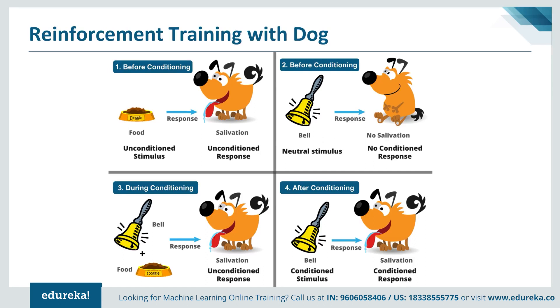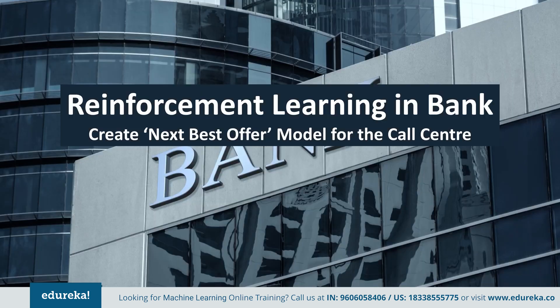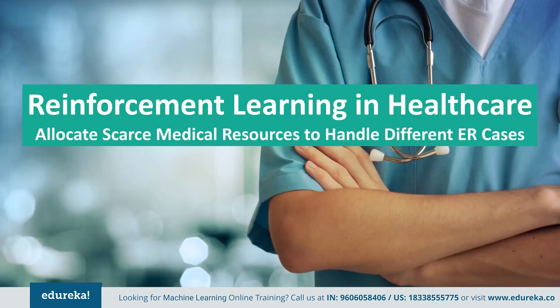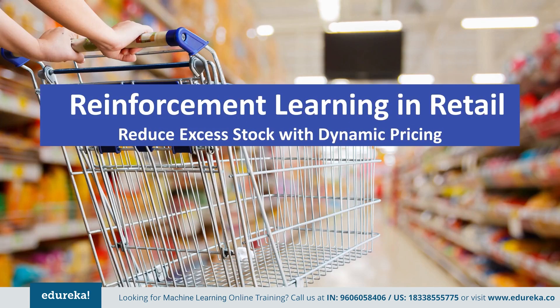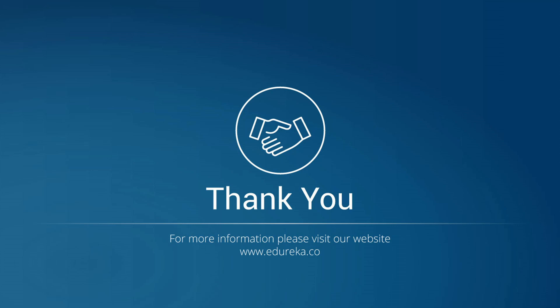In banking, reinforcement learning is used to create a next-best-offer model for a call center by building a predictive model that learns over time as users accept or reject offers made by sales staff. In healthcare, it is used to allocate scarce medical resources to handle different types of ER cases by building a Markov decision process that learns treatment strategies for each ER case type. In retail, it can reduce excess stock with dynamic pricing by building a pricing model that adjusts prices based on customer response to offers. I hope you now have a good understanding of what machine learning is. If you have any questions, add your query to the comment section. Thank you.